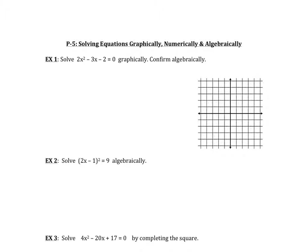Take your calculator and go into Y equals and put in the equation. You've got to make sure that equation has zero on one side in order to put it into Y equals. We're going to do 2x squared minus 3x — make sure you're using the minus and not the negative — and then minus 2. If your calculator says a syntax error, it's probably because you used the negative rather than the subtraction sign. Hit graph, and when we are solving graphically, we are looking for where that graph crosses the x-axis.